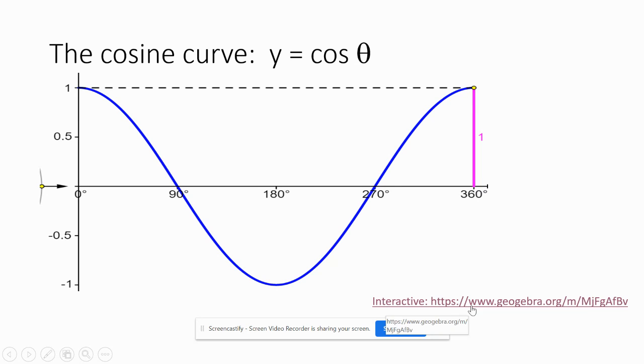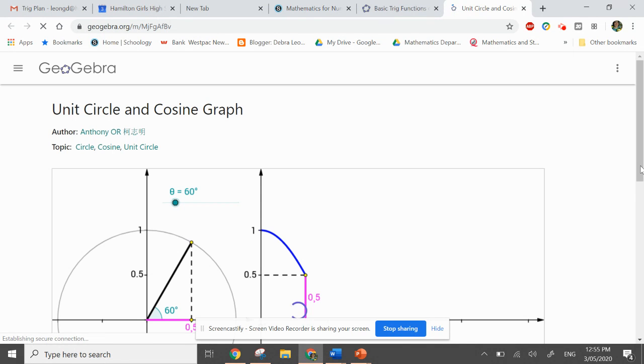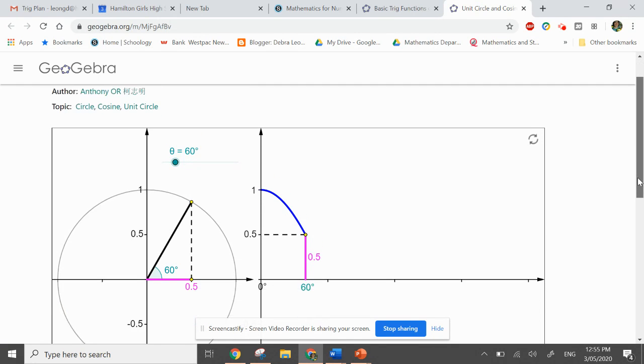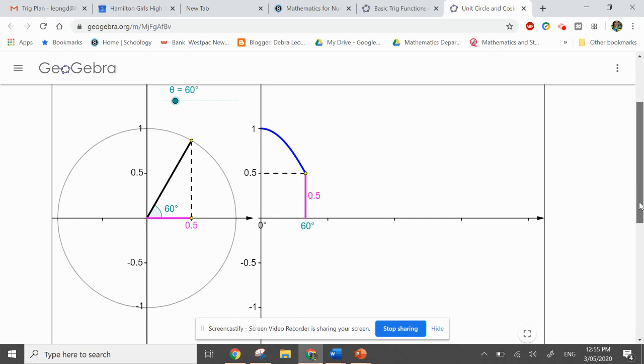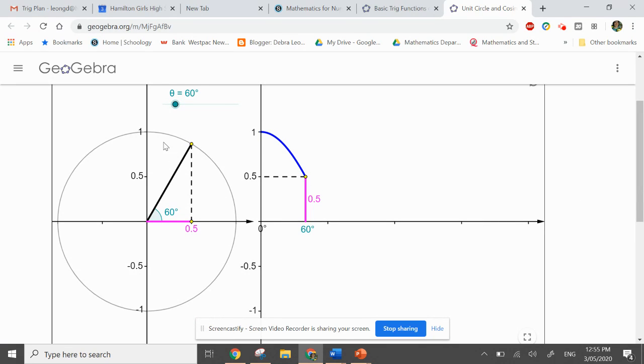What we're going to do is go to an interactive in Geogebra, and we're going to show how the cosine curve is derived. Let me just get that in the right place. Brilliant. Okay, so let's talk about what we've got here.